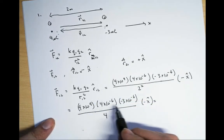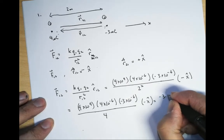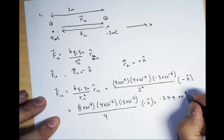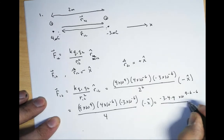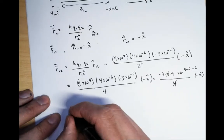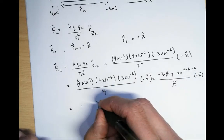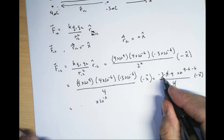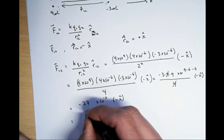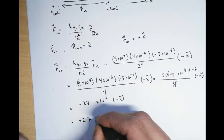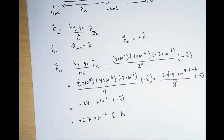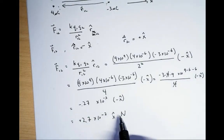Putting this all together: 9×10⁹ times 4×10⁻⁶ times minus 3×10⁻⁶, divided by 4, times minus x-hat. The exponent is 9 minus 6 minus 6 equals minus 3. The 4 cancels, giving minus 27, so the two minus signs cancel to give plus 2.7×10⁻² in the x-hat direction, in newtons.